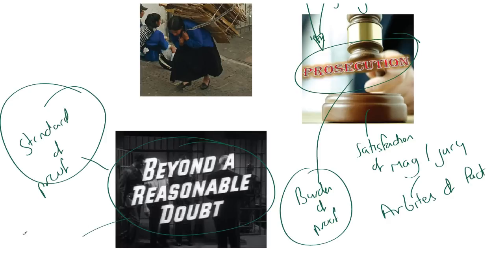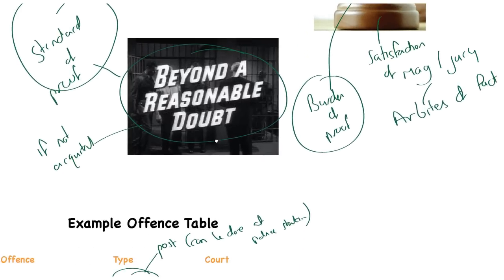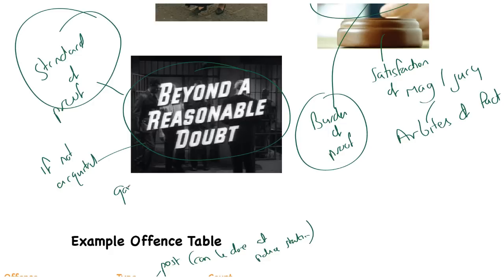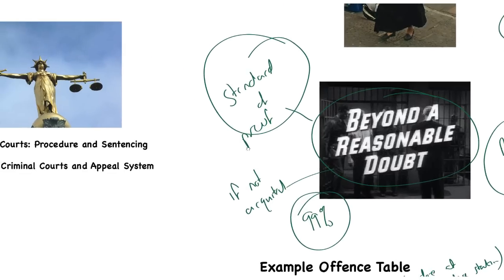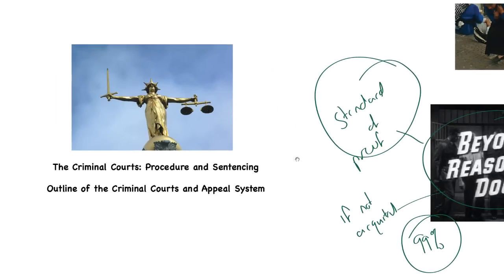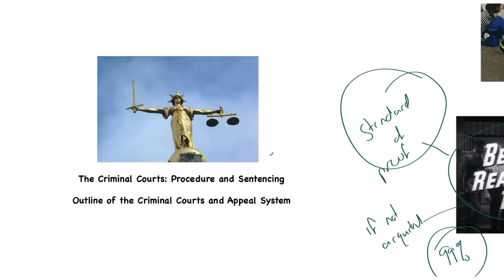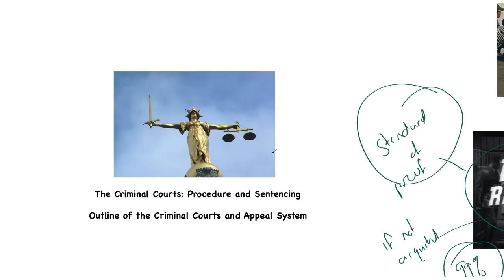If the prosecution cannot meet that standard, there is an acquittal. I generally tell my students that beyond reasonable doubt is about 99% — it has to be almost absolutely certain. That was a relatively short introduction, but it is so easy and straightforward. Commit it to memory, learn it, understand it, and you will very quickly get your full marks on these types of questions.